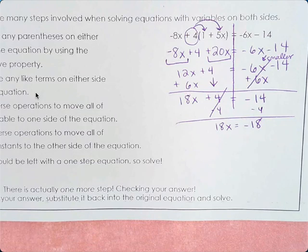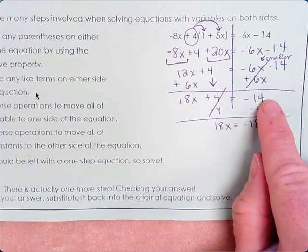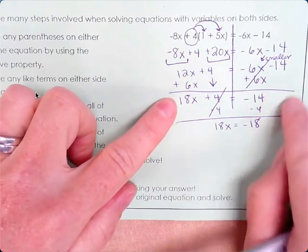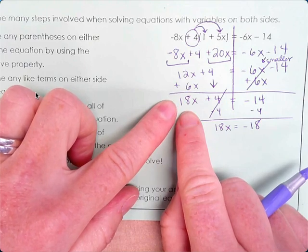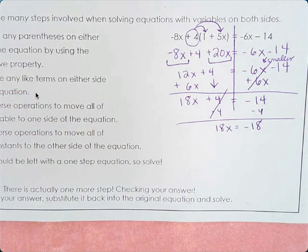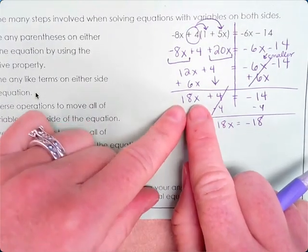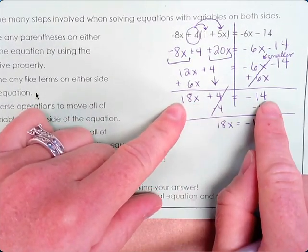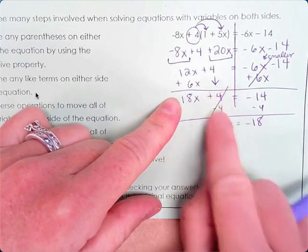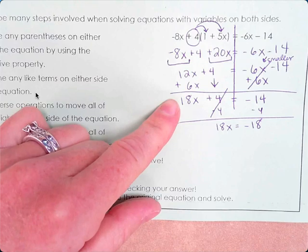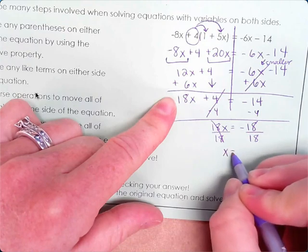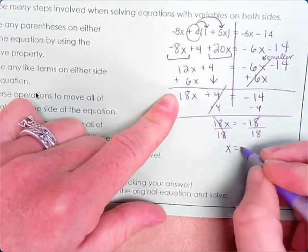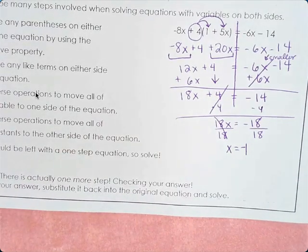Good question, though. So if the x was on that side, we would subtract that one? Yes. So if we had the 18x over here, I would add the 14 over here. You just want to move it so that your x value is by itself on one side or the other. So this is kind of like your one-step, or two-step equation here. You need to get x by itself, so that means we need to move this positive 4. We do that by subtracting. And then we divide by 18 on both sides. So negative 18 divided by 18, negative 1.